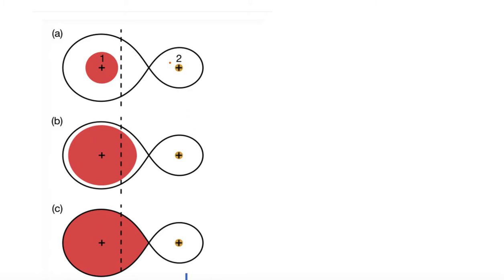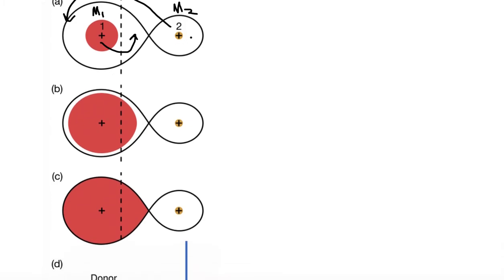We start out with a detached binary where the more massive star is on the left, and the less massive star is on the right, so I will label them M-sub-1 and M-sub-2. The dashed line is the center of mass, so the system is going to orbit around the center of mass. Now, with the orange or red star on the left being the more massive star, it's going to evolve sooner than M-sub-2.